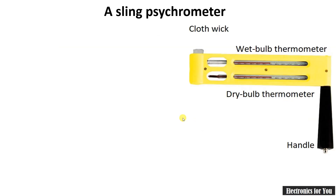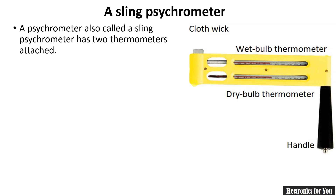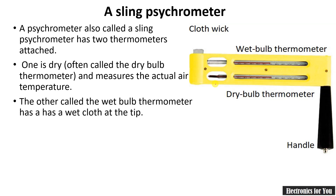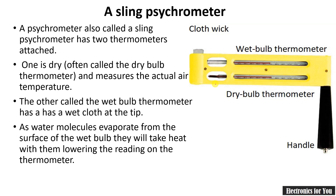Now let's look at one of the most famous types of hygrometer: the sling psychrometer. This diagram shows the sling psychrometer, which consists of two different thermometers. One is a dry bulb thermometer and the other is a wet bulb thermometer. The wet bulb thermometer has a cloth wick on its tip. The dry bulb thermometer is used for measuring dry air temperature, whereas the wet bulb thermometer is used for measuring relative humidity.